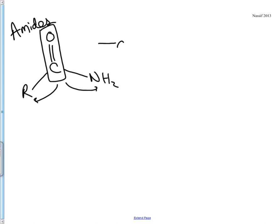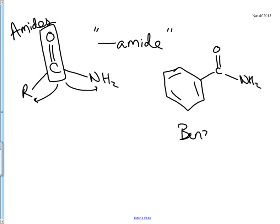With naming, you simply name the molecule by writing amide at the end of it. So, for example, if we had our benzene ring, we have our carbonyl group here, and an NH2, this would simply be called benzamide.